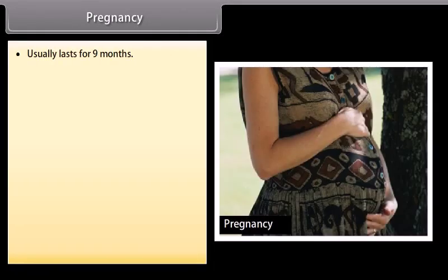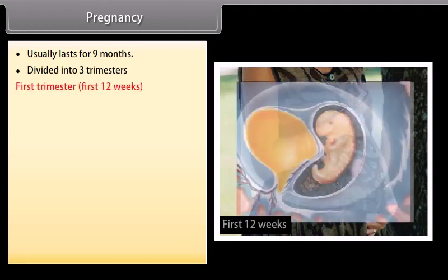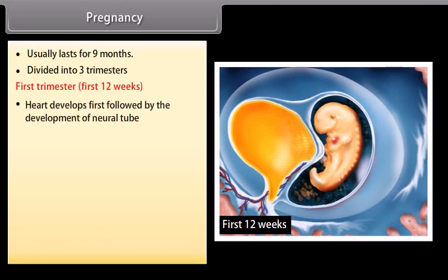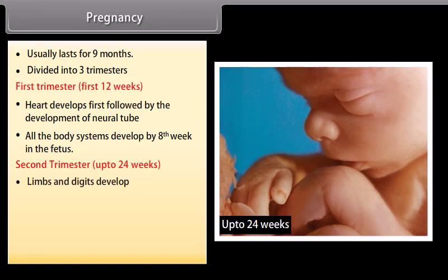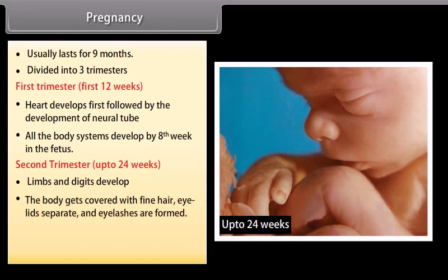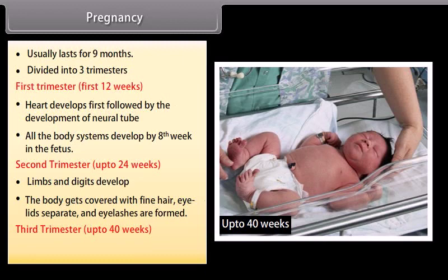Pregnancy usually lasts for 9 months and is divided into 3 trimesters. First trimester (first 12 weeks): the heart develops first, followed by the neural tube; all body systems develop by the 8th week. Second trimester (up to 24 weeks): limbs and digits develop, the body gets covered with fine hair, eyelids separate and eyelashes are formed. Third trimester (up to 40 weeks): the full-term fetus develops and is ready for delivery.